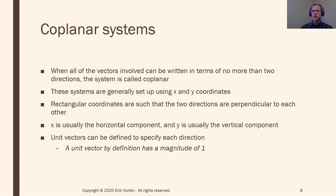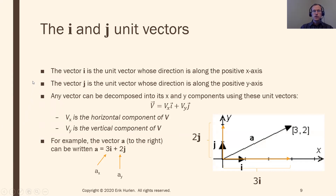To help with vectors, it's useful to define unit vectors — any vector whose magnitude equals one. We use special unit vectors for the coordinate directions. There's a special unit vector in the x direction and one in the y direction. These are called i and j. i is the unit vector in the positive x direction — pointing right a distance of one. j is the unit vector in the positive y direction — pointing up a distance of one.